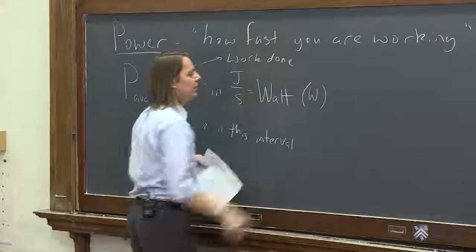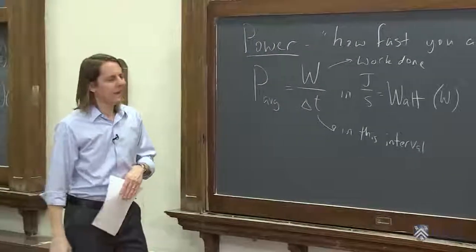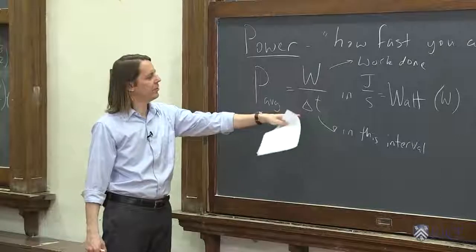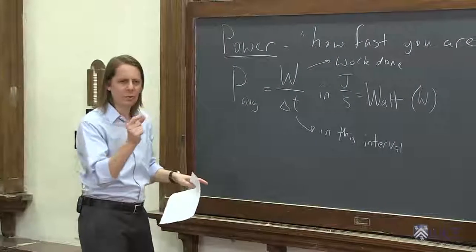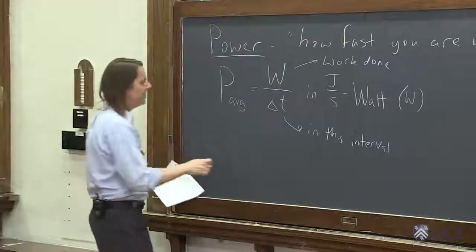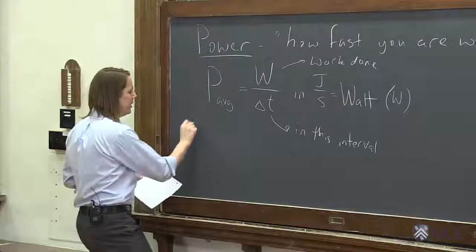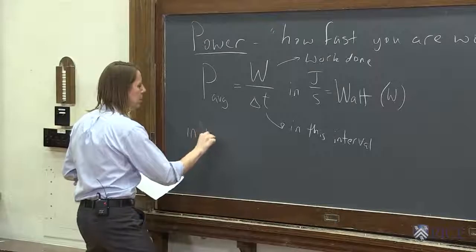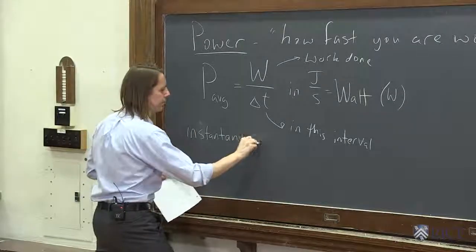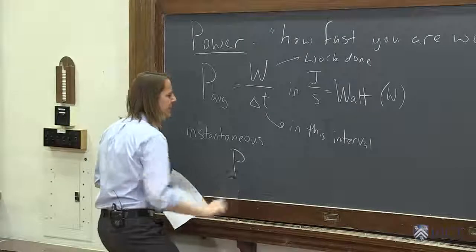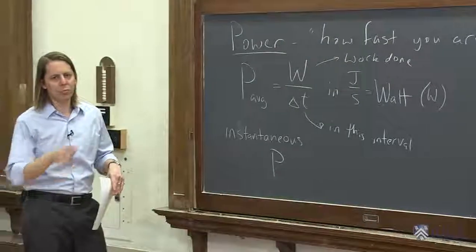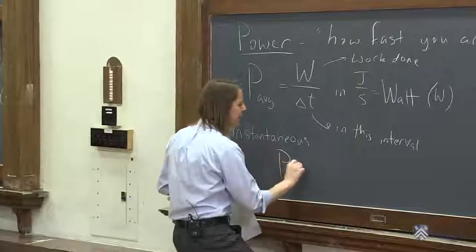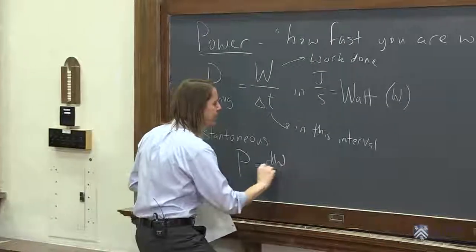And the abbreviation is big W. And it's a lot like average velocity. Remember, average velocity was a displacement over a delta T. We can also think of an instantaneous value at a really small delta T. So if we wanted to look at the instantaneous version, then that would just be P. And just like velocity, we won't put INST at the bottom. If we see no subscript, we mean instantaneous. And that would just be the time rate, the derivative, dW/dt.